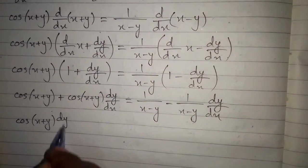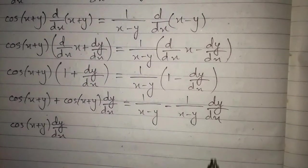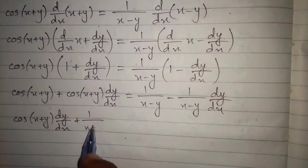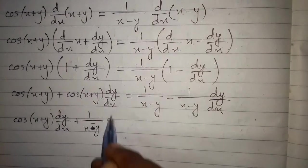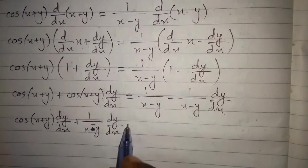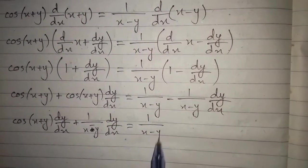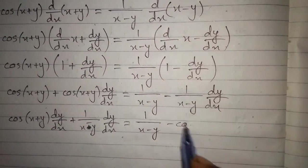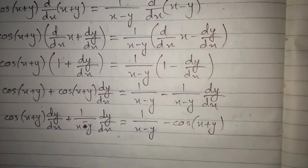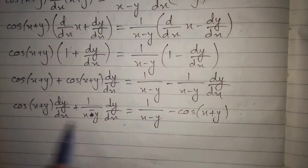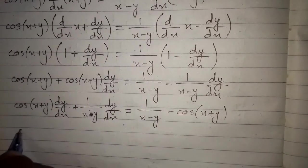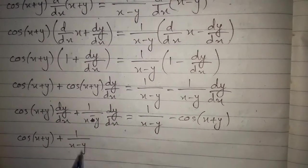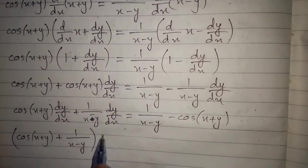Rearranging, we move the dy/dx terms to one side: cos of x plus y times dy/dx plus 1 upon x minus y times dy/dx equals 1 upon x minus y minus cos of x plus y.